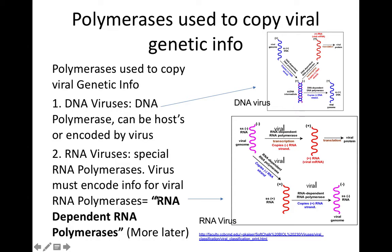Such an enzyme would be officially called an RNA-dependent RNA polymerase. 'RNA-dependent' means an RNA template is used, and 'RNA polymerase' tells us the enzyme makes RNA. Our cells lack RNA-dependent RNA polymerases, so RNA viruses have to encode information for their own viral RNA-dependent RNA polymerase. RNA viruses have a special challenge — they have to supply this RNA-dependent RNA polymerase so that their RNA can be copied.